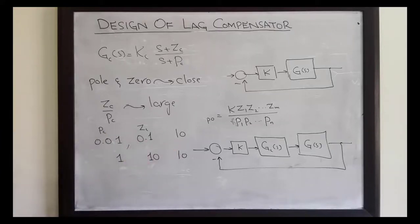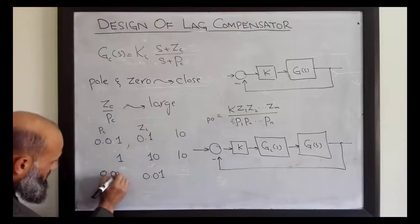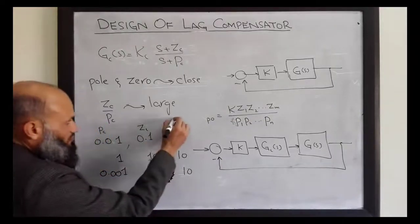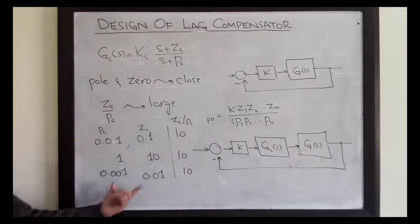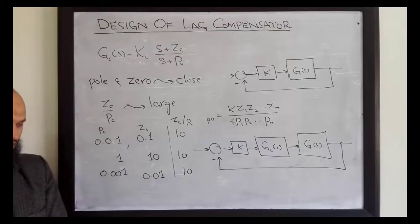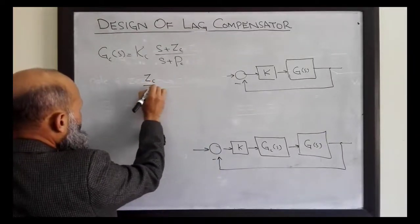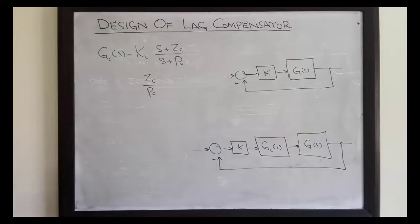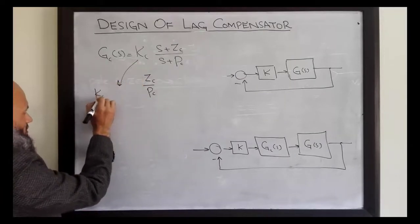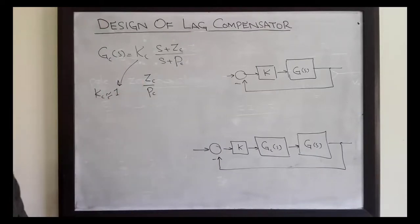Improvement in steady state error will be the same for both selections. However, if we have an even smaller selection of Zc and Pc, the ratio Zc over Pc is the same but these poles and zeros are very, very close to each other and there will be much less distortion on the transient characteristics. We can select the ratio Zc over Pc equal to the required improvement in steady state error. Kc is generally taken to be equal to 1, and these values should be taken small so there is no distortion on the transient characteristics.